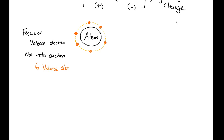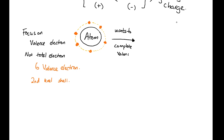For this particular atom, it has six valence electrons. This example would be the second-level shell, so there is actually an inner shell as well. This atom has six valence electrons and wants to complete the valence shell. There are two options.